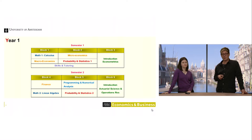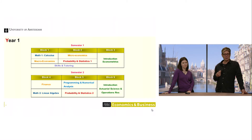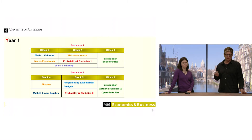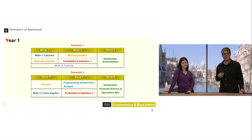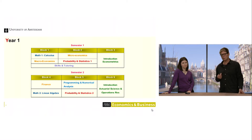In the third block you get an introduction to Econometrics — a first, shallow look into the field. Semester two covers Finance, Mathematics 2, Programming/Numerical Analysis, and again Probability and Statistics. You round off the year with an introduction to Actuarial Science and Operations Research. It's quite technical — a lot of mathematics and a lot of probability and statistics.